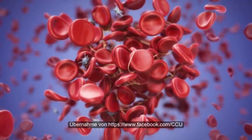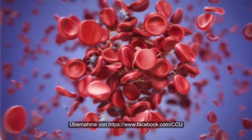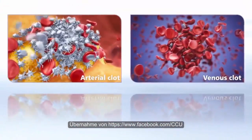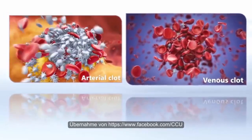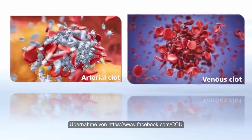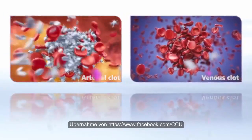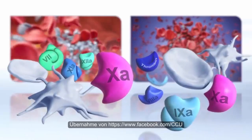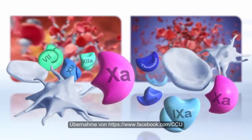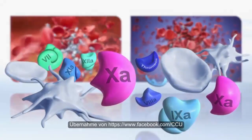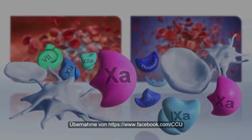Vascular injury, hypercoagulability of the blood, and venous stasis play a crucial role in their development. It is important to note that the formation of both types of clots — arterial and venous — always involves platelets as well as coagulation factors.